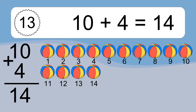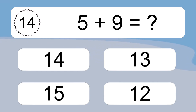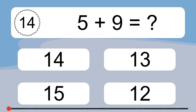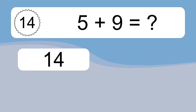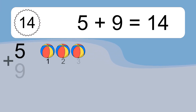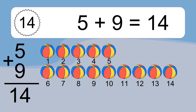5 plus 9 equals what? 5 plus 9 equals 14. Let's count it: 1, 2, 3, 4, 5, 6, 7, 8, 9, 10, 11, 12, 13, 14.